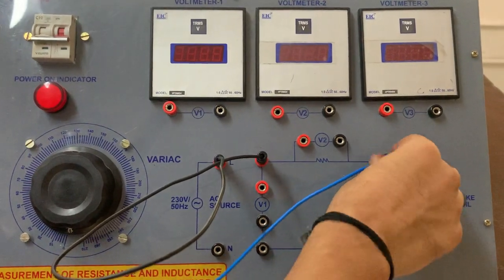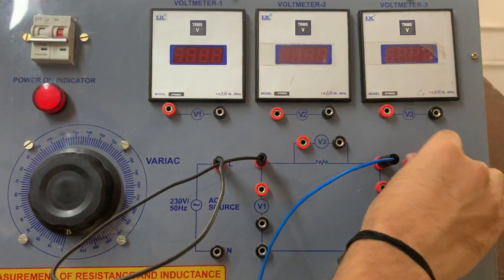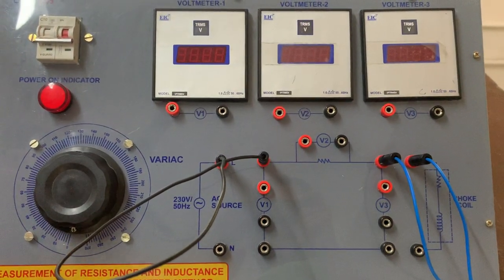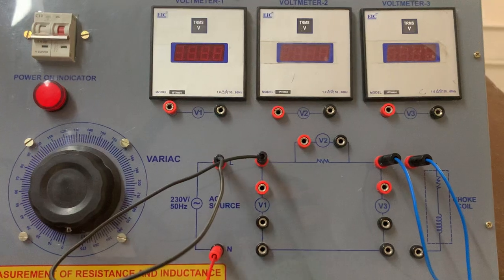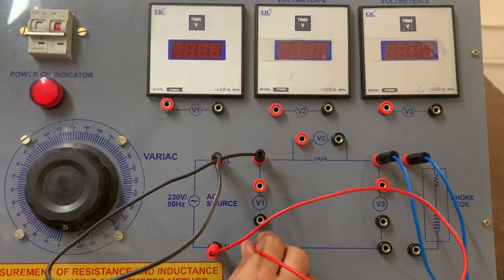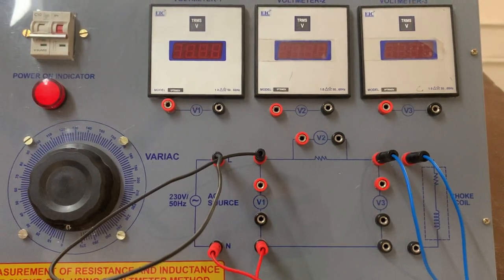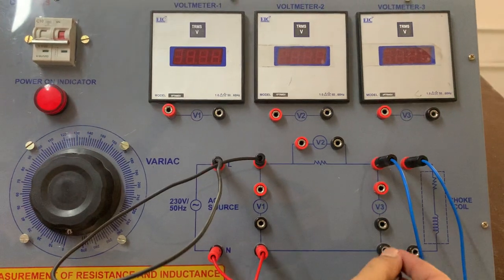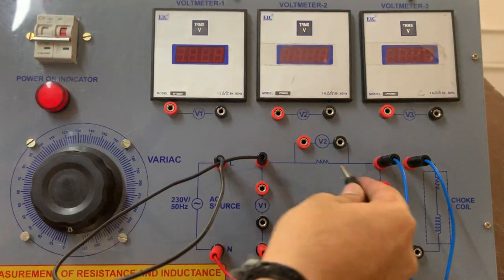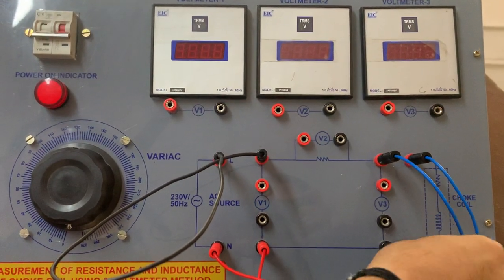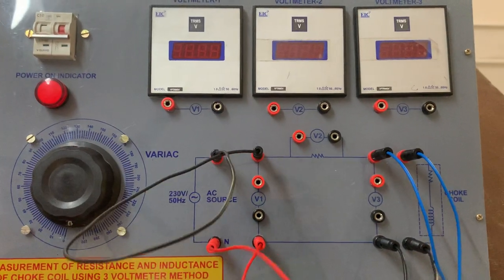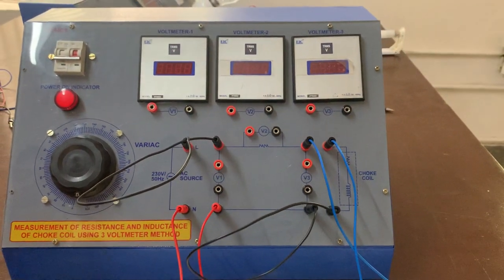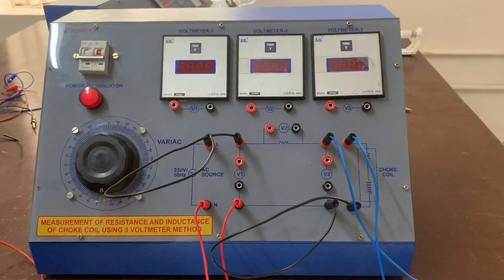The next connection will be made to these two points, followed by these two, and finally this connection. Once we're done connecting all the wires, we'll connect the voltmeter side.